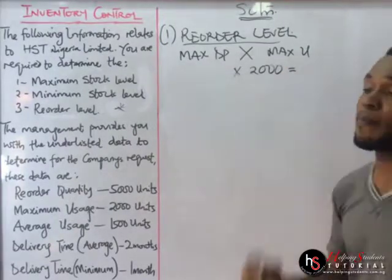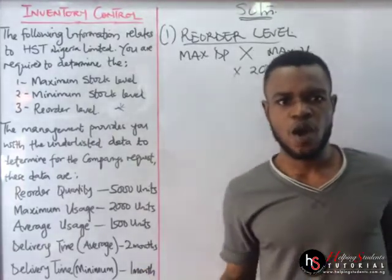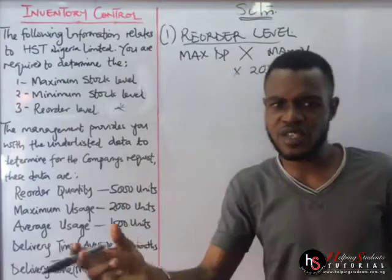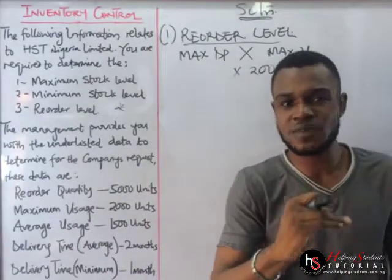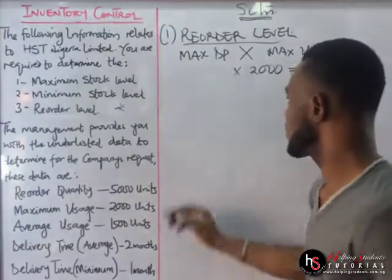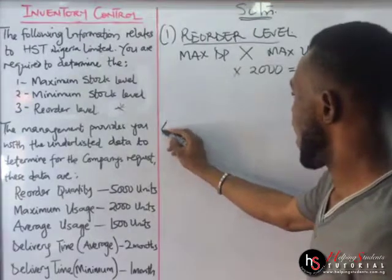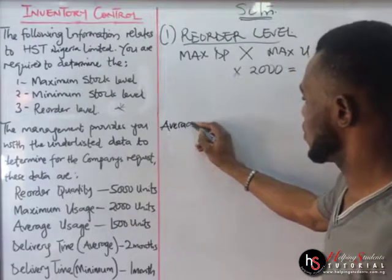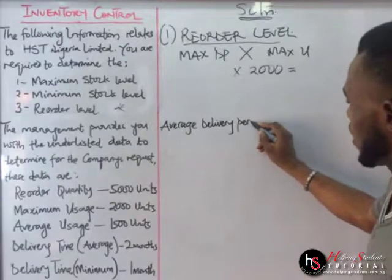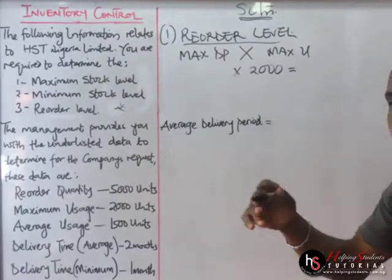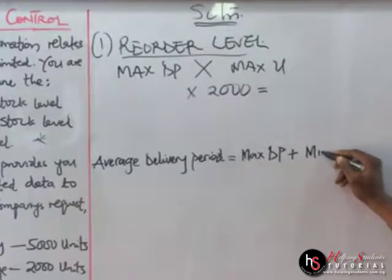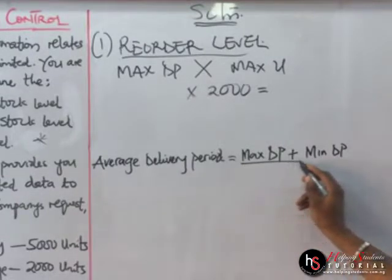We need to determine the maximum delivery period. We use the formula for average delivery period: average delivery period equals maximum delivery period plus minimum delivery period divided by 2. From the question, the average delivery period is 2 months. So we have: 2 = (M + 1) / 2, where M is the unknown maximum delivery period and 1 is the minimum delivery period.